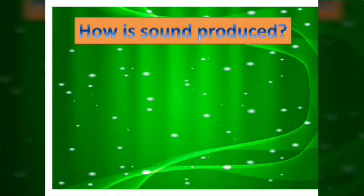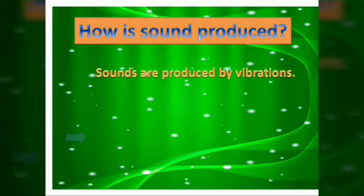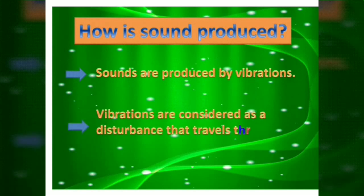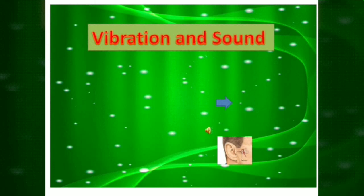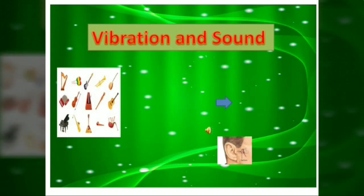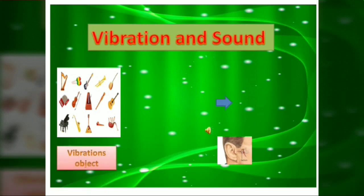How is sound produced? Sounds are produced by vibrations. Vibrations are considered as a disturbance that travel through a medium. This slide shows how sound produces vibration. When an object vibrates, it causes movement in surrounding air molecules. These molecules bump into the molecules close to them, causing them to vibrate as well.